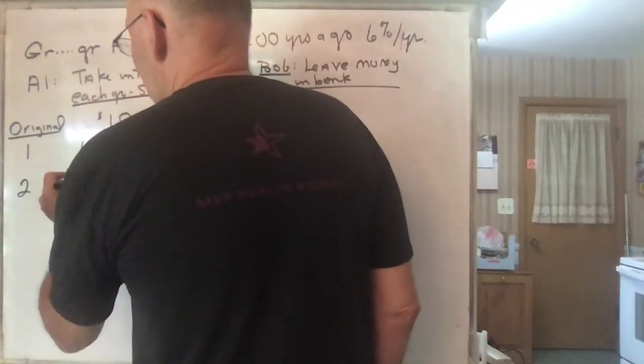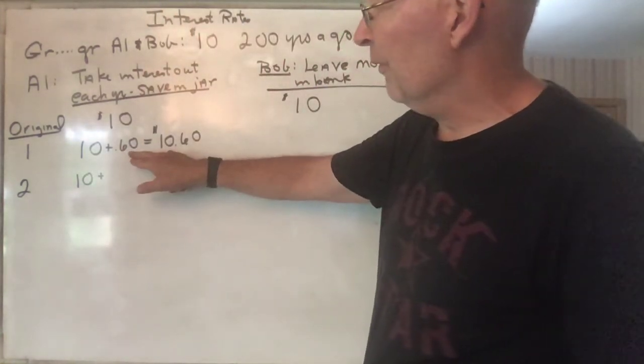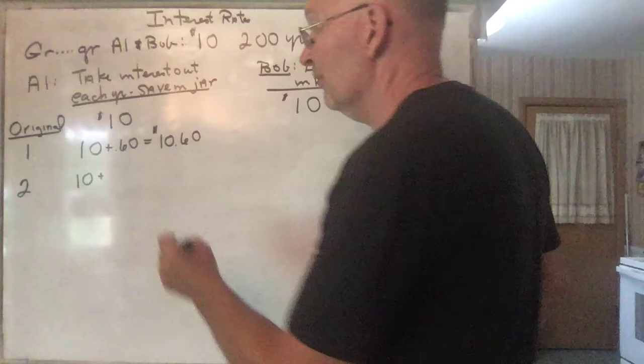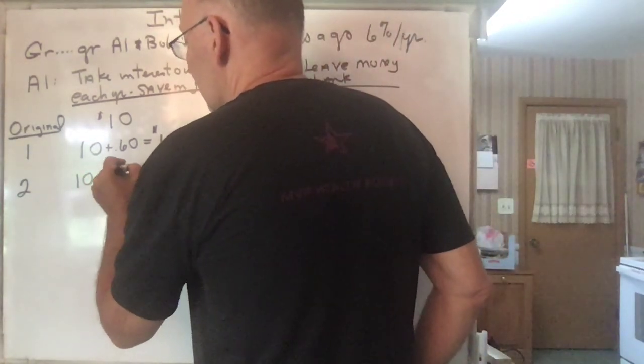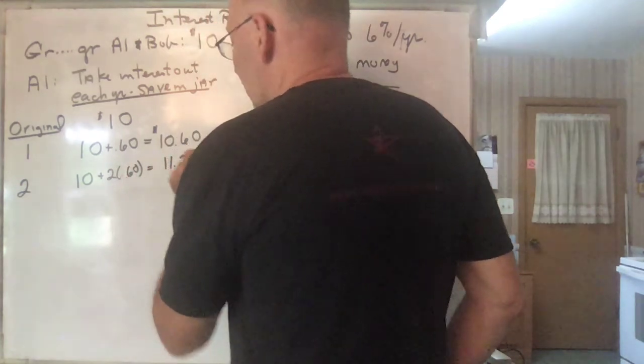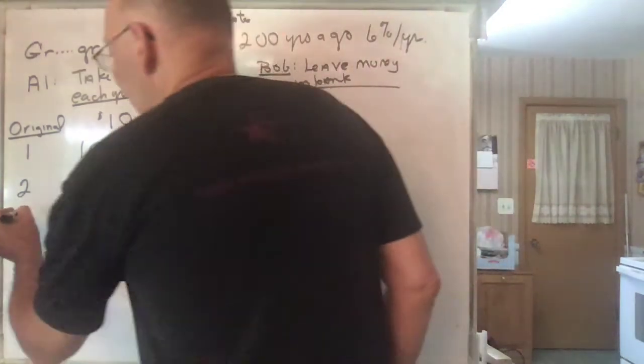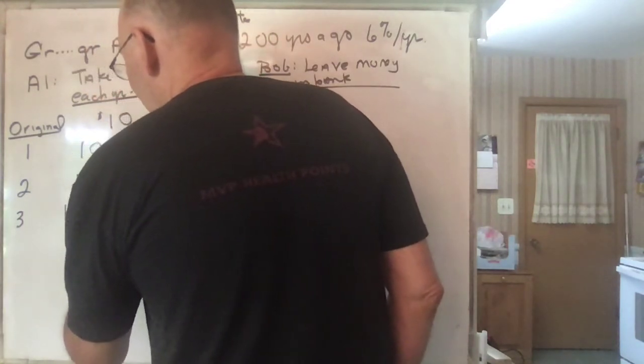Agreed. At the end of the second year, he's going to have the original $10 and now he's going to have the 60 cents from the first year plus 60 cents times the second year, so he's going to have 2 times 60 and so that's going to be $11.20.